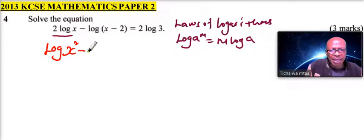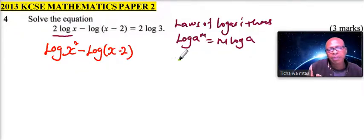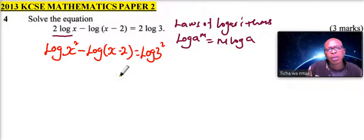We come to the second one. The second one will not change, so we have the logarithm of x minus 2, which is equal to, this other one, we will still apply the same law. So we will say this is the logarithm of 3 squared. We have applied that law, which is the third law.